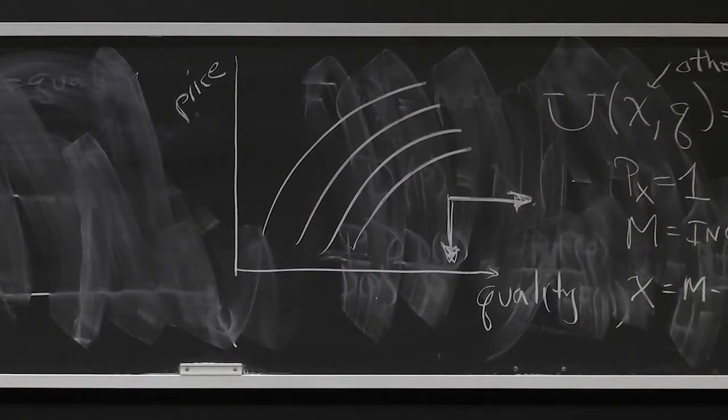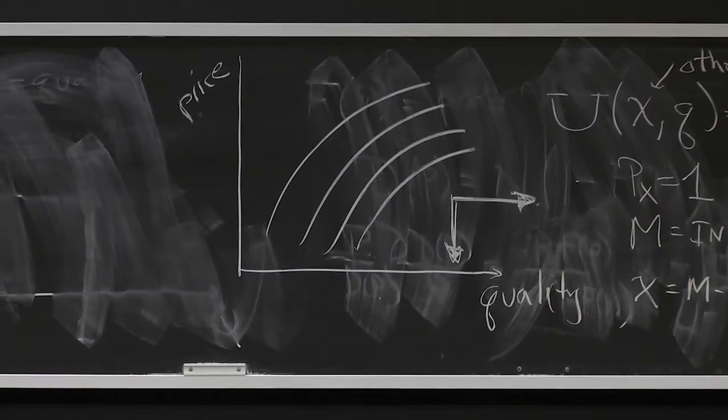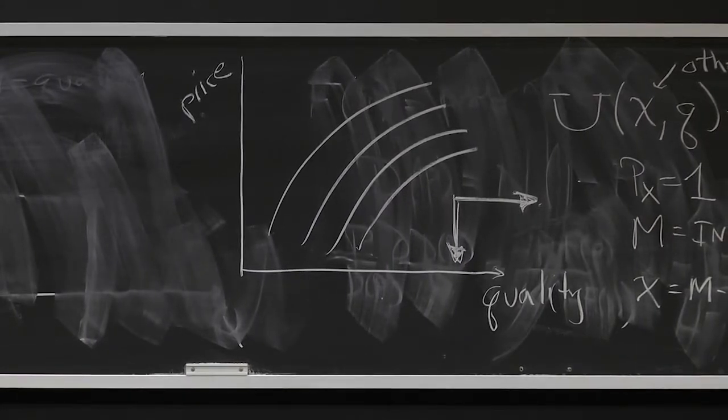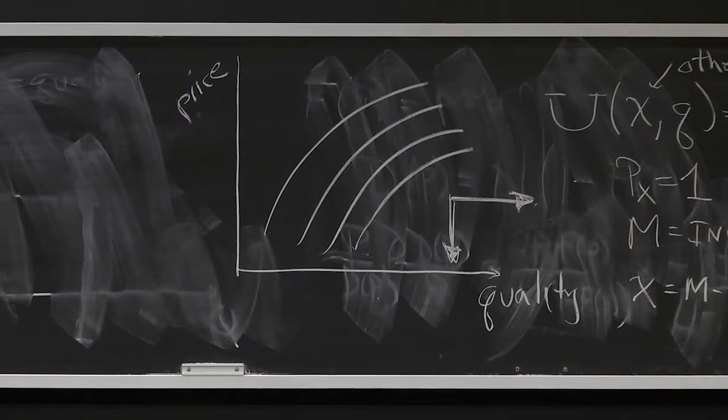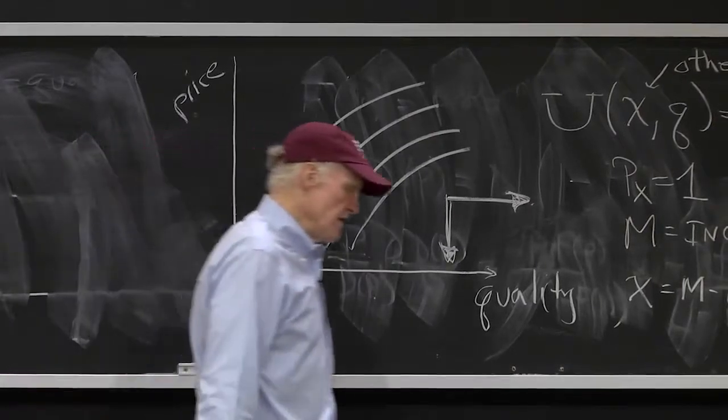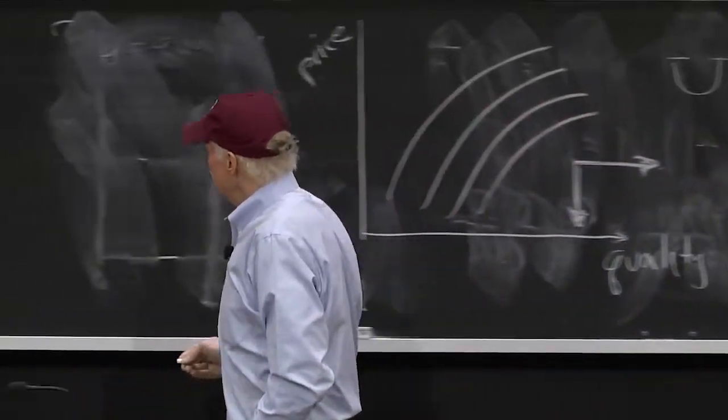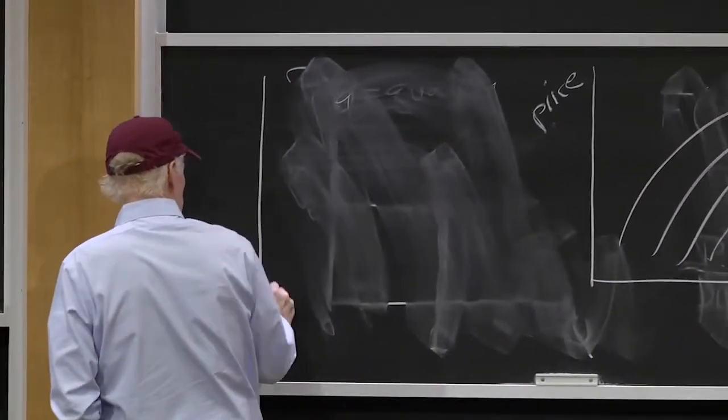Now, in order to talk about a market, I'm going to have to put in the supply side of the market. And I'm going to also have to think about how consumers make their decisions. And we're also going to have to think about what we mean by an equilibrium. So let's think about how we're going to describe consumer behavior.